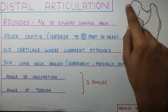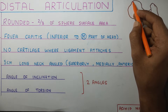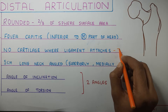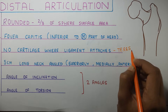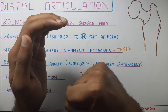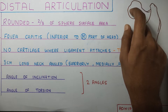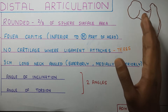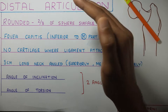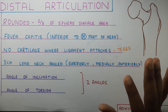The distal articulation has a rounded head, and two-thirds of the sphere covers the surface area. There is an area called the fovea capitis where there is no cartilage and there is attachment of the teres ligament. The teres ligament attaches from the fovea capitis to your acetabulum, and through this ligament many blood vessels pass and supply the head of the femur. There is also a neck which is around 5 cm long, angled superiorly, on the medial side, and slightly anteriorly.